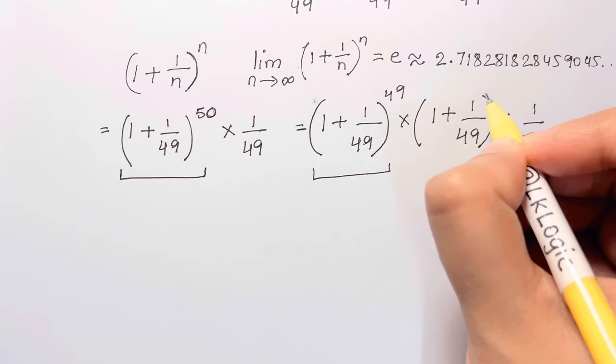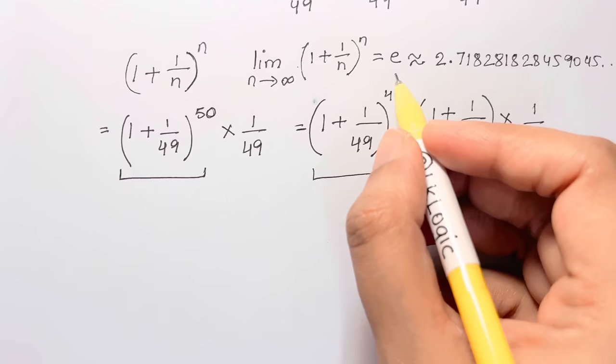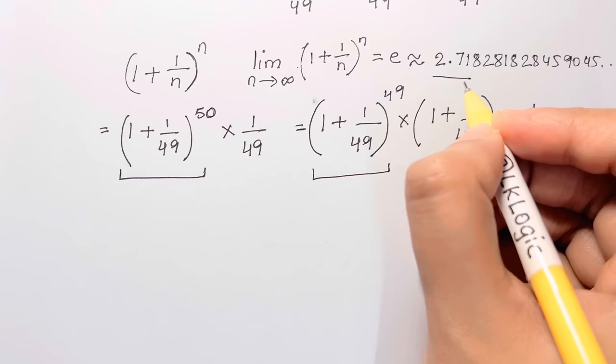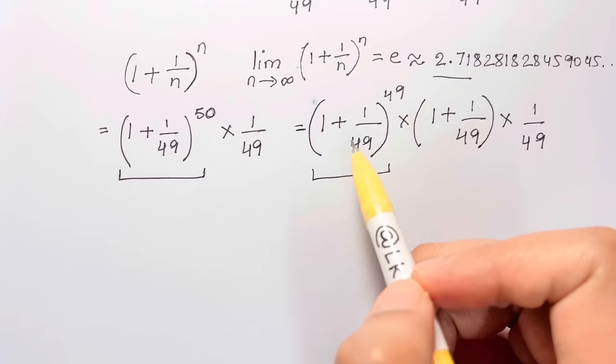For this question, this method is a piece of cake. Just look: e is approximately 2.718, which is of course smaller than 3. Whatever the value of n, (1 plus 1 over n) to the n is always smaller than 3. So this part of our expression is smaller than 3.